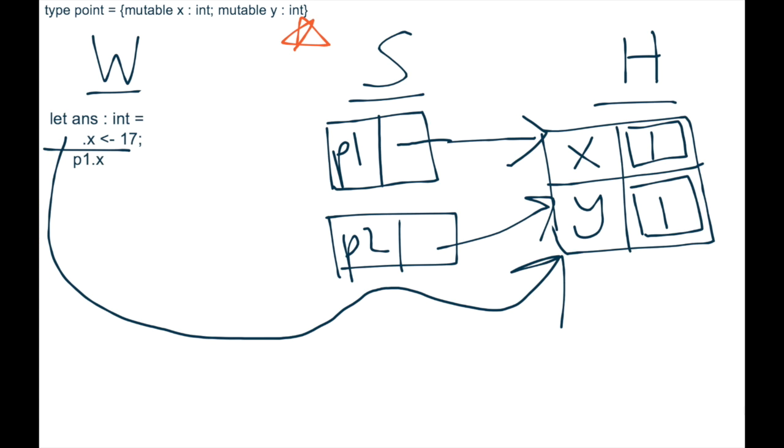which means it can be changed, which means it's okay to give P2.x 17. So we can now simplify that line on the workspace just down to a unit because it's now been processed. And we can give P2.x the value of 17.